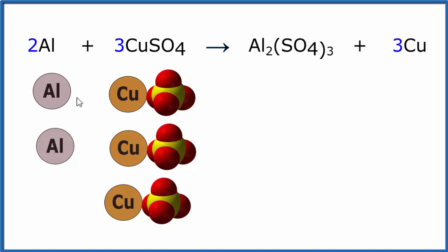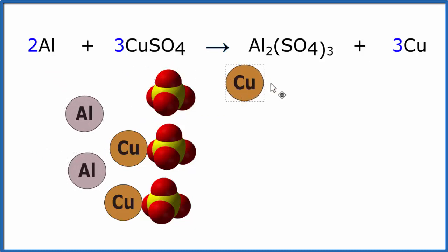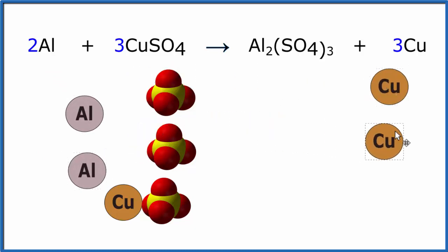We have three. So the aluminums will come in and displace the coppers. Because aluminum has a three-plus ionic charge and the coppers have two-plus, we only need two aluminums to replace these coppers. So they come in, and the coppers are replaced. We have our three coppers on the product side of the equation.